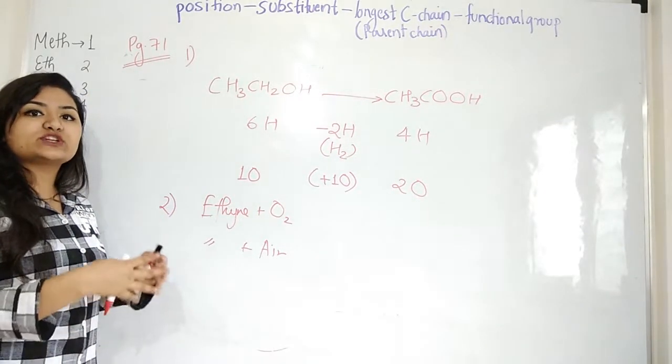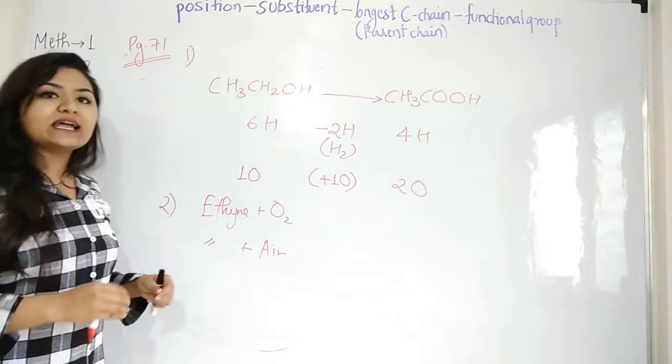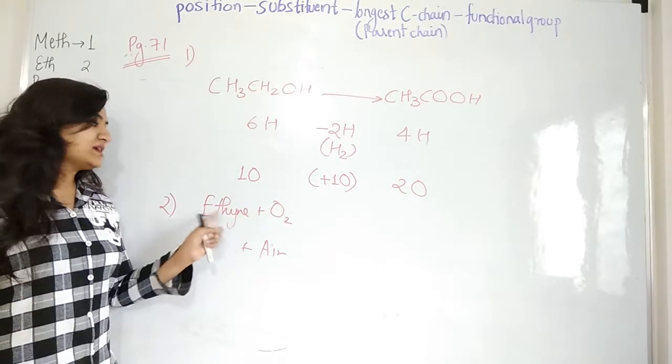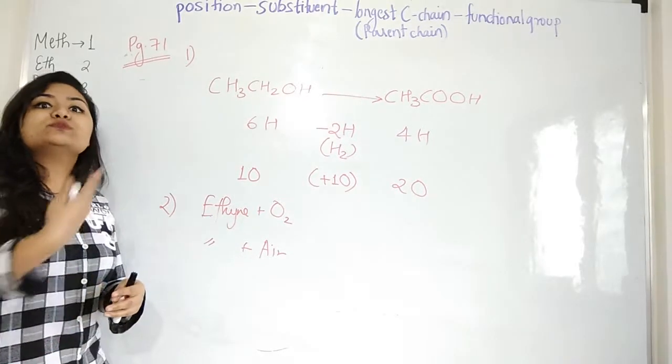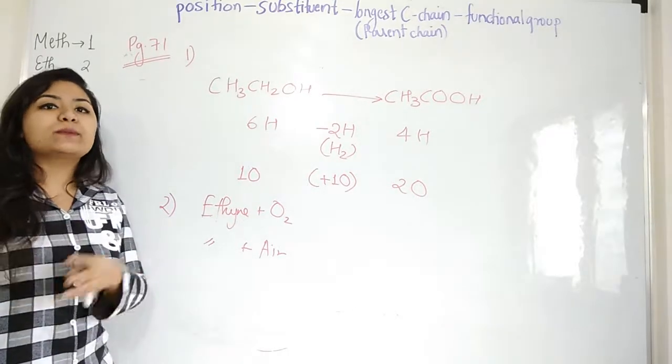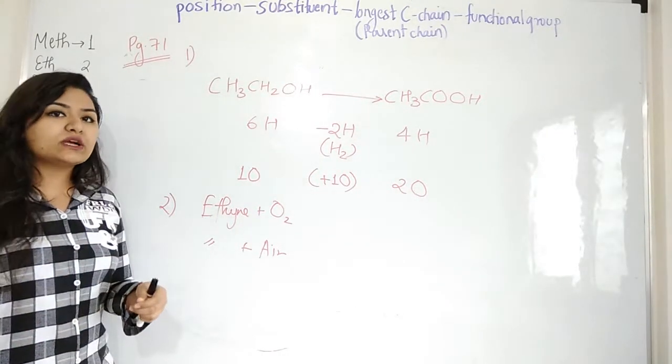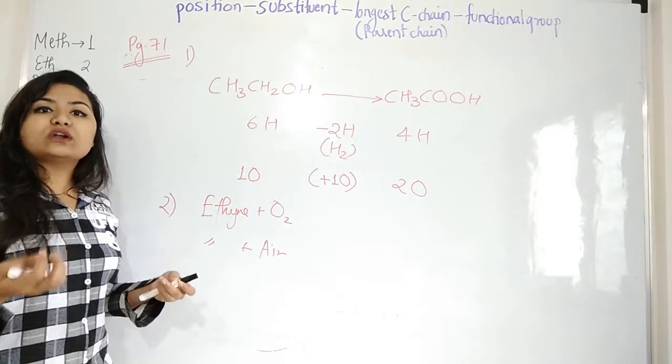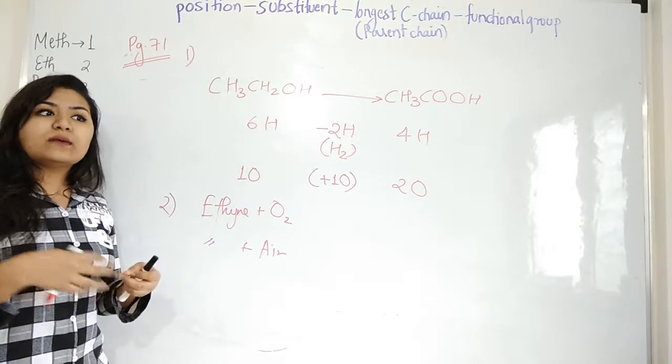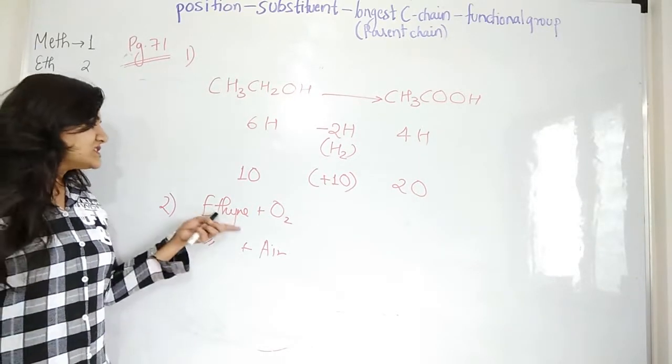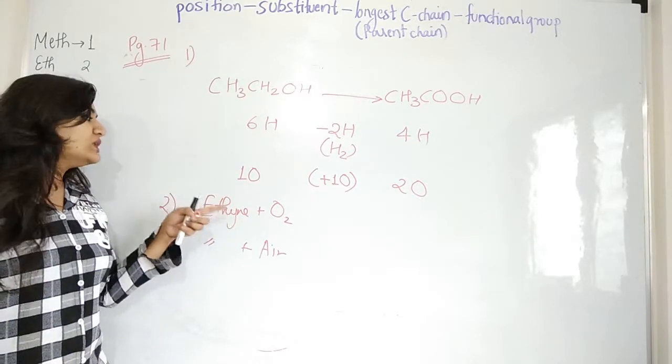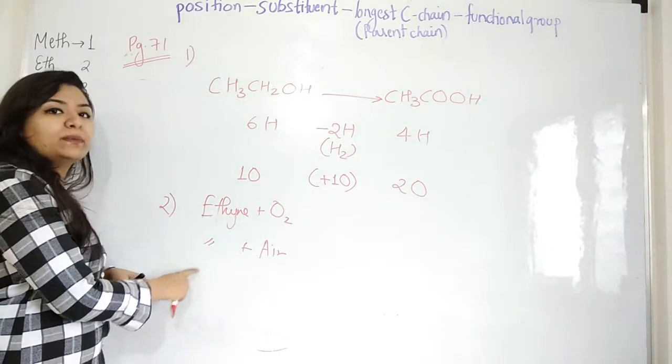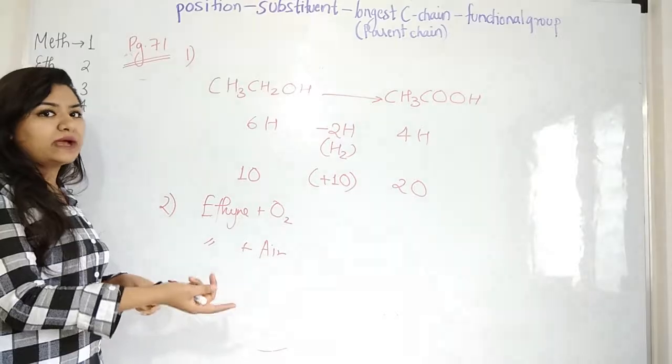With ethane and air, because air has other particles, dust particles, other gases, there will be a lot of soot particles produced. There will be so many other byproducts which are not needed. If byproducts are formed, the amount of energy produced will be less because a lot of air will be used up in forming byproducts. This will not give the proper efficiency or the proper energy which is to be given out by the fuel.